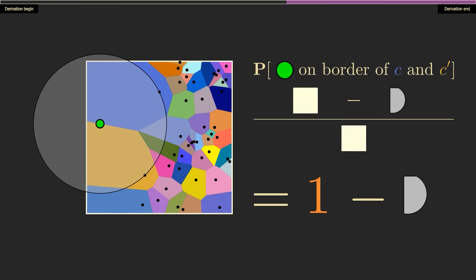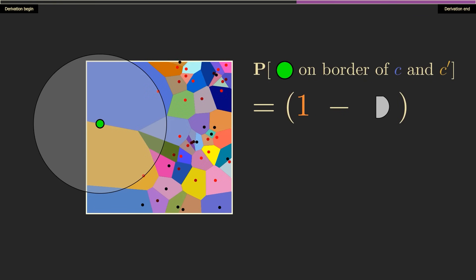Each other site must be outside this region, so this gets raised to the power of the number of other sites, n-2.